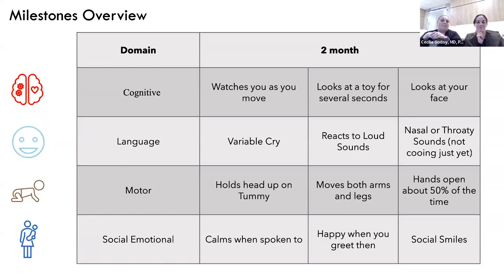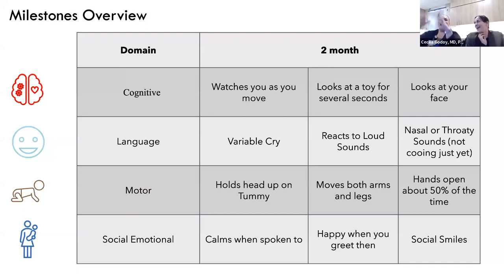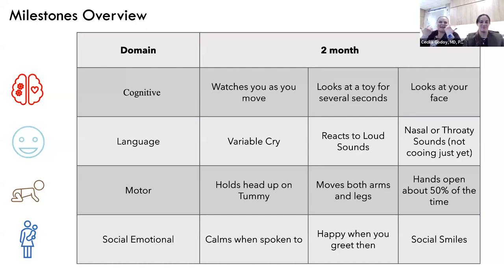At birth, babies have their little fists clenched; around two months, hands should be open about half the time. Social-emotionally, at two months they start to calm when you pick them up, and you can see they're happy when you greet them. The social smile emerges — not from gas or a full belly, but genuinely when they see you. That's when you forget you didn't sleep last night.